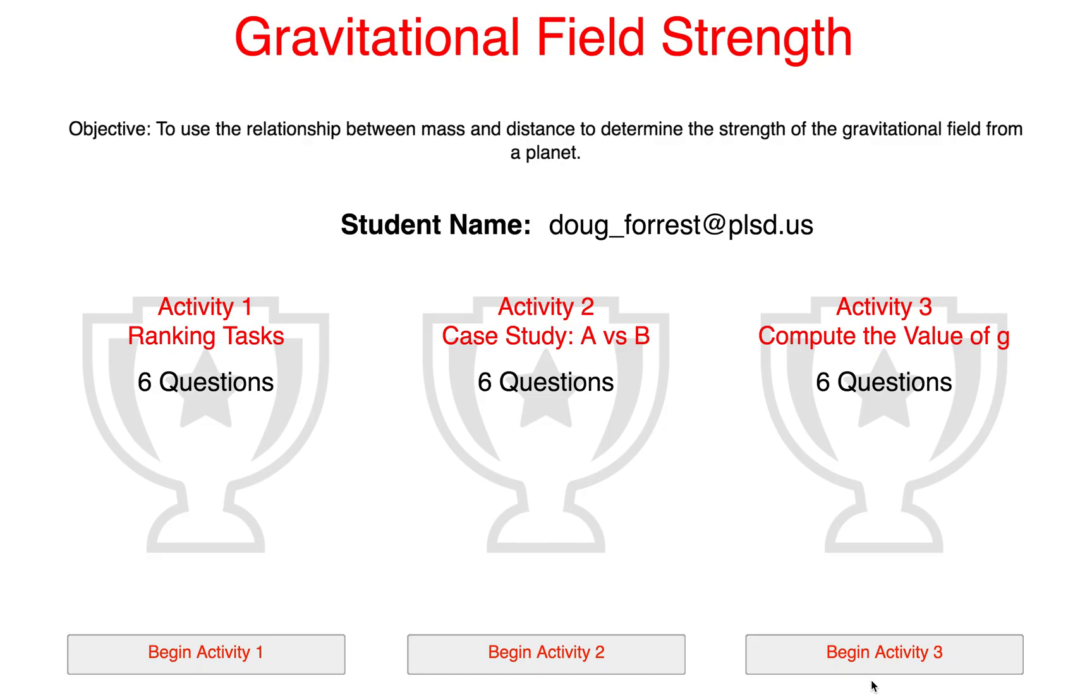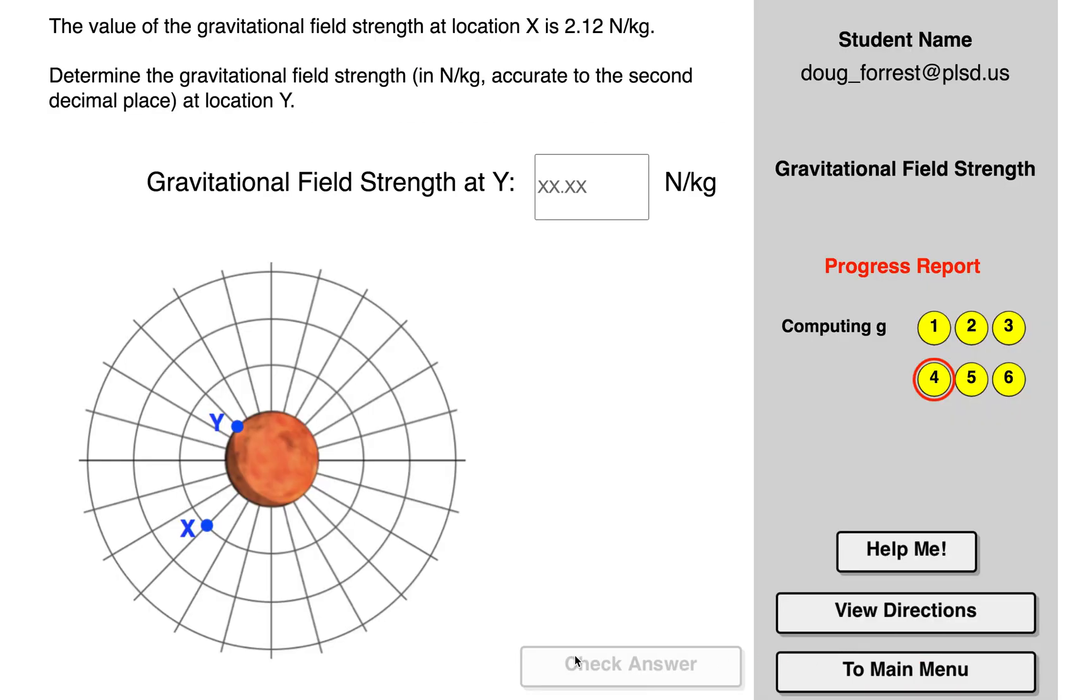We're going to do one example from this one. So the gravitational field strength at X, which is out here, is 2.12 newtons per kilogram. Each of these markings are the same distance, so Y is basically on the surface. X then you go further and further. So determine the gravitational field strength at this. I think to the center is one other unit of measure, so I think this is twice as close to the center of the planet as this. That means I think at Y it would be one quarter as much, so a quarter of 2 is 0.5, a quarter of this is 3, so I think it's going to be 0.53.